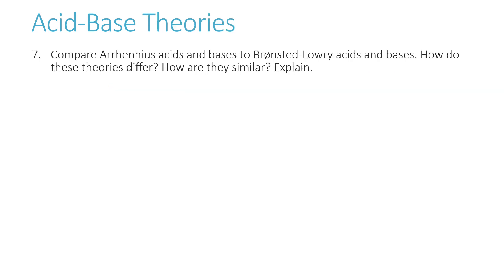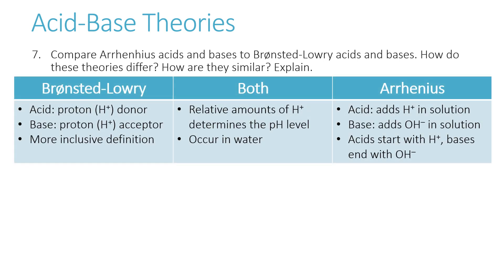Compare Arrhenius acids and bases to Bronsted-Lowry acids and bases. According to Bronsted-Lowry, an acid is a proton donor — it loses H⁺ — and bases accept H⁺. This is a better definition than Arrhenius because it explains why things like ammonia act as bases. According to Arrhenius, an acid adds hydrogen ion to solution and a base adds hydroxide ion. Acids start with H⁺ and bases end with OH⁻. In both theories, the relative amounts of hydrogen ion determine pH, and both apply in water.